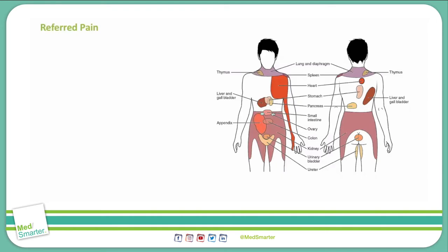If this sounds confusing, that's okay — it can be hard to wrap your head around this concept. Stay tuned and the examples we cover are going to help you understand referred pain. Sometimes you'll get questions about pain that's felt in an area distant from the actual diseased organ, and it can be really confusing if you're not familiar with the concept of referred pain — for example, the classic case of cholecystitis, where inflammation of the gallbladder causes pain in the shoulder.